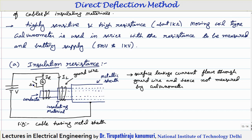Whenever you are using the galvanometer for directly measuring, you can see here one switch is kept — this switch will be closed so that the galvanometer is bypassed. Otherwise, if that high value of current passes through your galvanometer, it may damage. So whenever you are connecting to the supply, first the switch S is closed so that the current is bypassed. We wait until the capacitor is completely charged or the displacement current becomes zero, after that we measure the galvanometer.